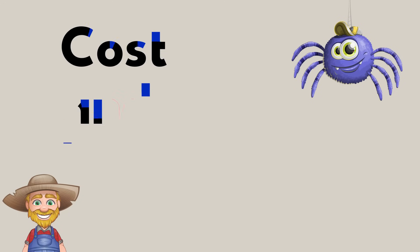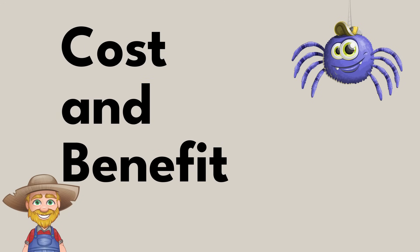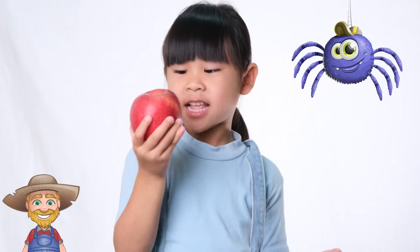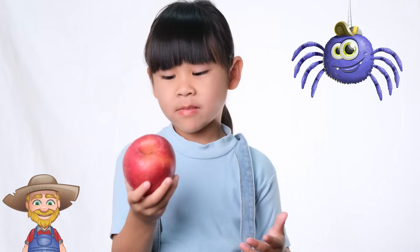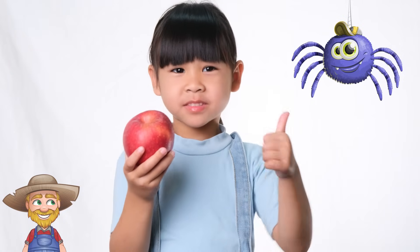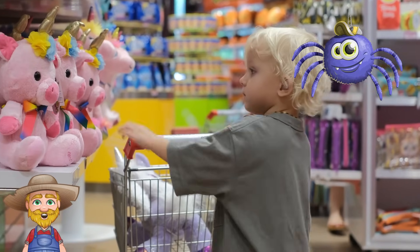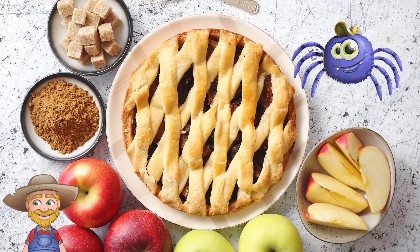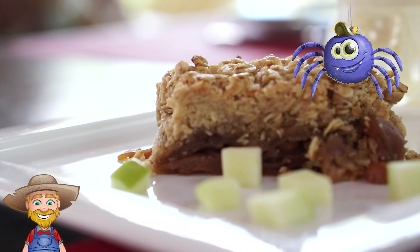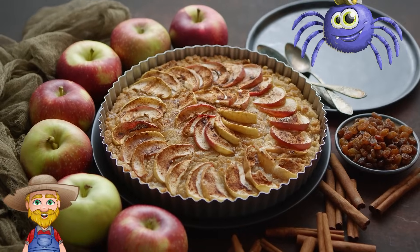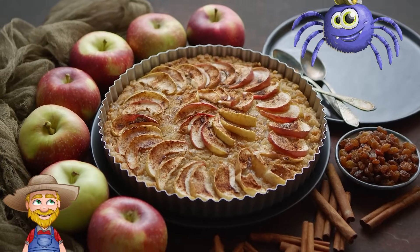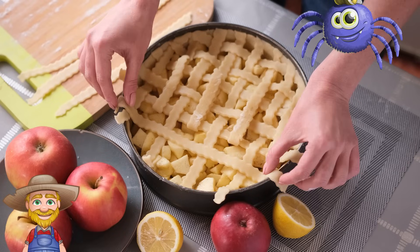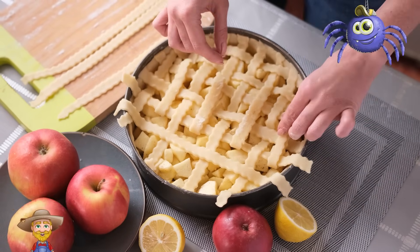Another important concept in economics is cost and benefit. Cost is what you give up to get something, and benefit is what you gain from getting something. When you make a choice, you have to consider the costs and benefits of your options. For example, look at these apple pies. I have apple pie, apple crumble, apple tart, and apple turnover. Which one do you think is the most expensive to make? Let's see your guess.